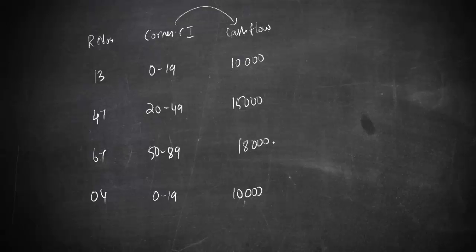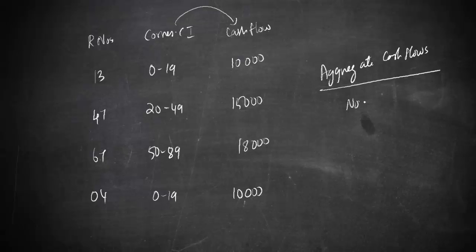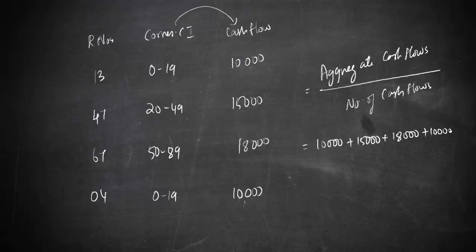The simulation theory says: to find the possible cash flow, you find the cash flows using random numbers like this, then you aggregate these cash flows and divide by the number of cash flows — or the number of simulation runs. In this case it is 10,000 plus 15,000 plus 18,000 plus 10,000, which equals 53,000, divided by 4.